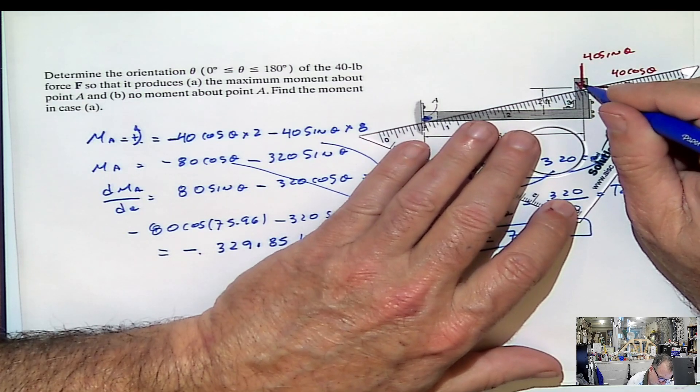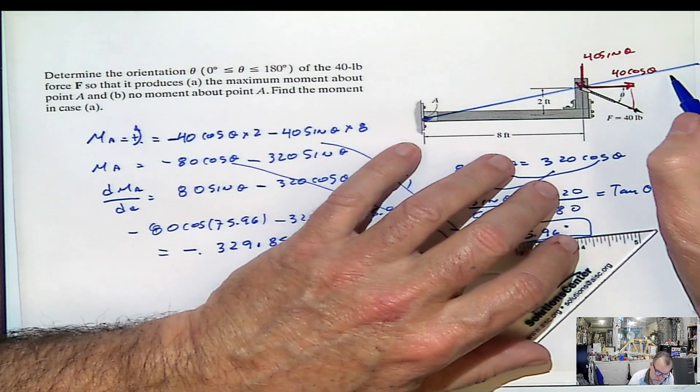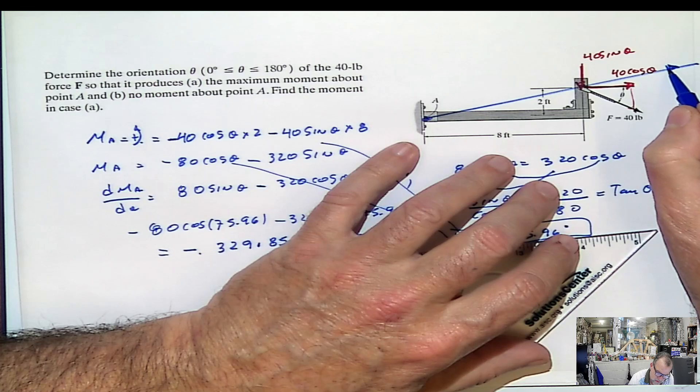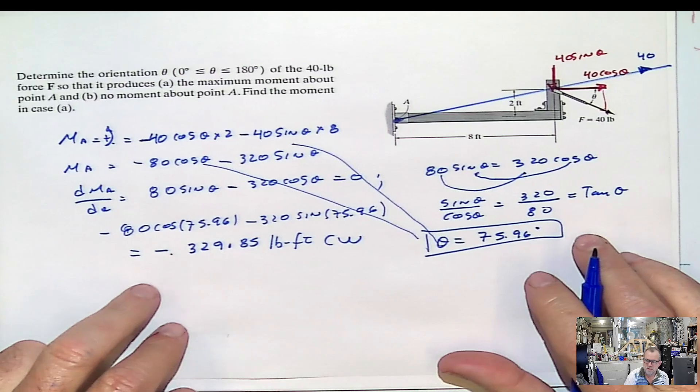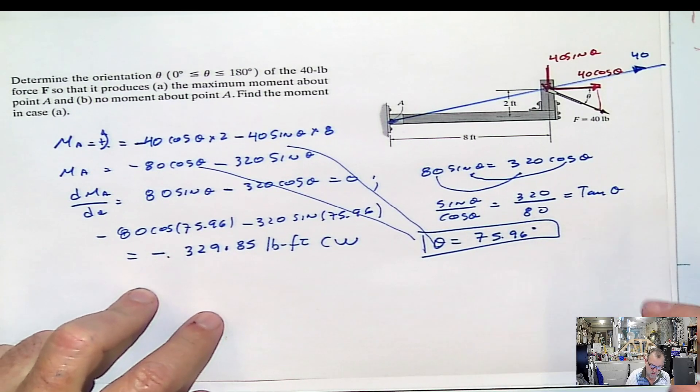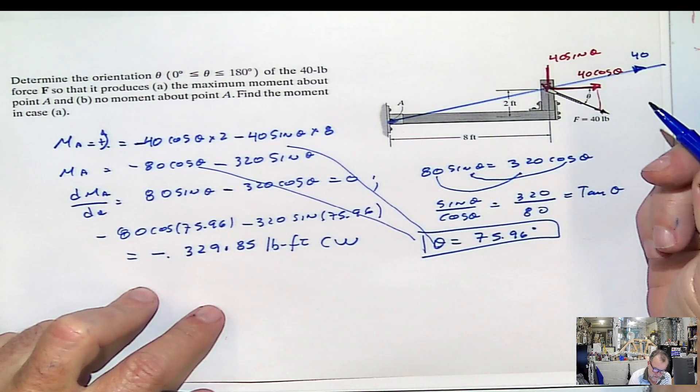So if the force is going to be applied here, and this is the point A, this is the line of action of the force that has to be. Force has to be applied in that line of action in order for passing through the point and not producing moment.